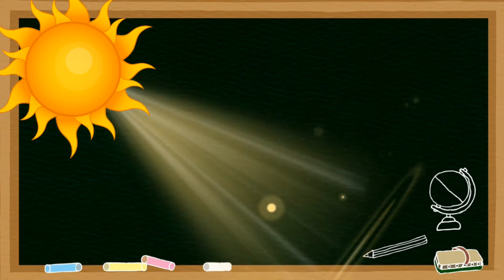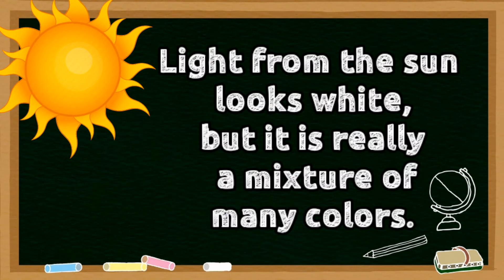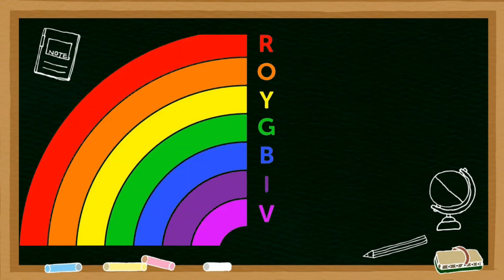The main source of light on Earth is the Sun. Light from the Sun looks white, but it is really a mixture of many colors. The colors in white light are red, orange, yellow, green, blue, indigo, and violet.